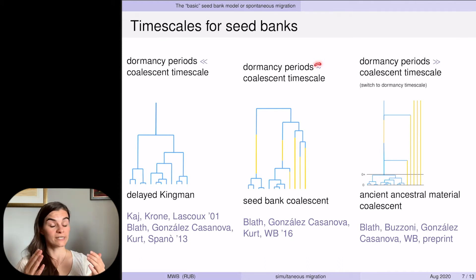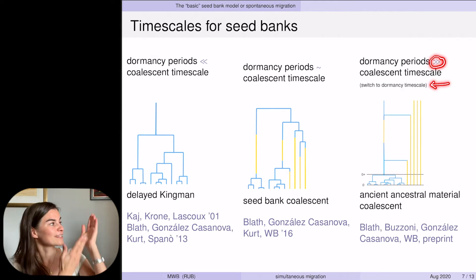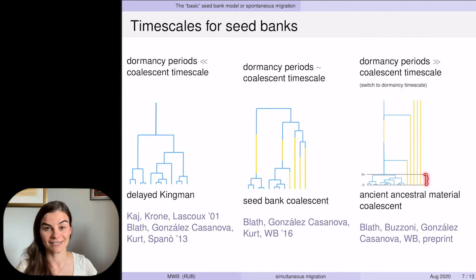If your dormancy periods are on the coalescent time scale, then you get a strong seed bank effect, because the genealogy of your model will be given by the seed bank coalescent, which is significantly different from the Kingman coalescent. If your dormancy periods are a lot longer than the coalescent time scale, you have to switch to the dormancy time scale to see anything in the limit, and you get these kind of crazy objects like the ancient ancestral material coalescent where everything coalesces instantaneously. All of these three have moment duals that describe the evolution of the purple frequency in the corresponding population.